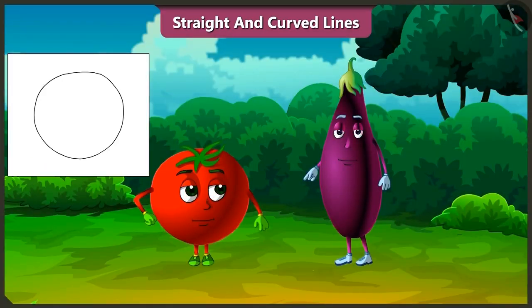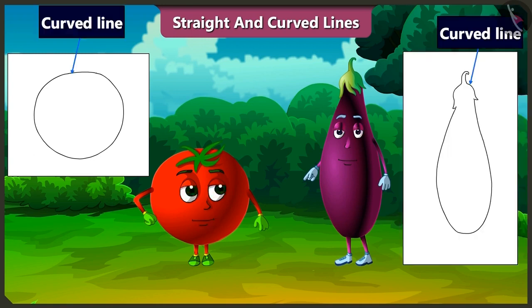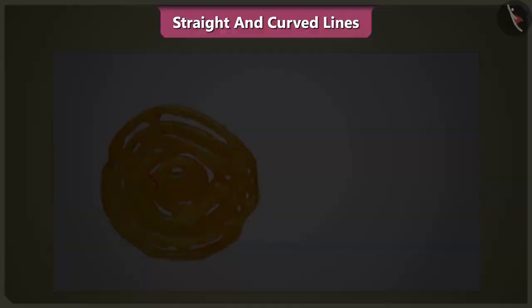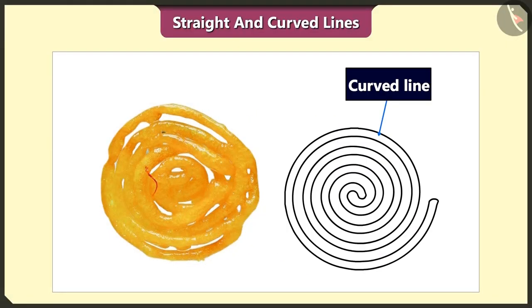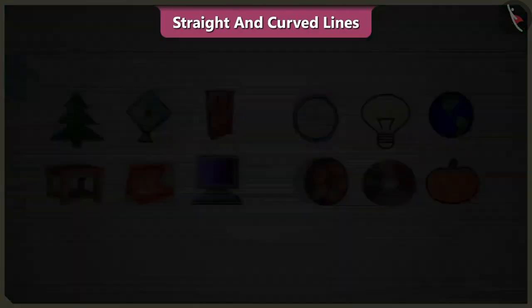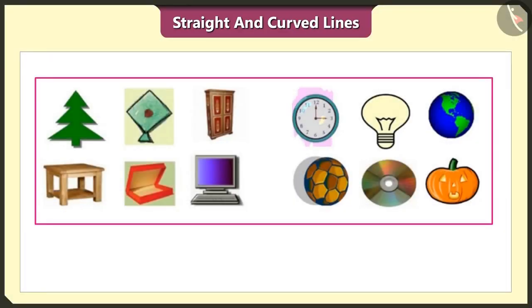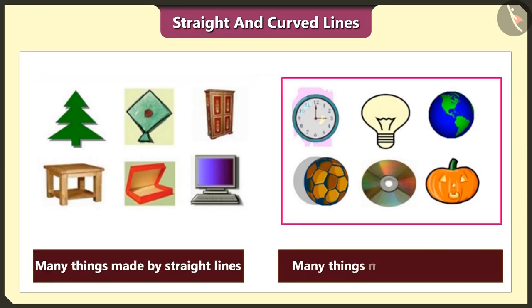Oh Bingu, did you notice? Both our shapes are also made up of curved lines. And Jalebi is also made with curved lines. Oh, it is very interesting. Yes, many objects in our surroundings are made with either straight lines or curved lines.